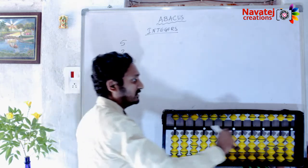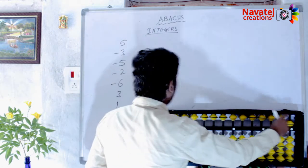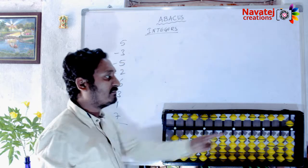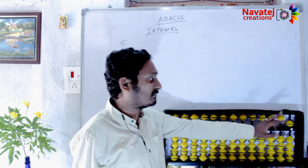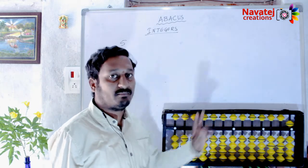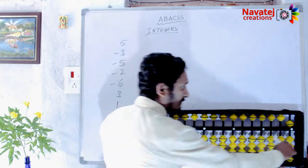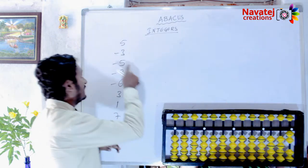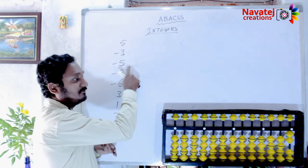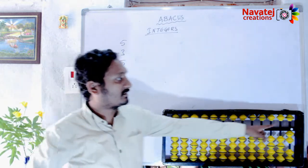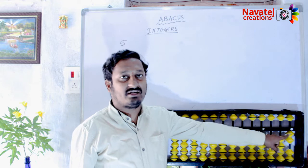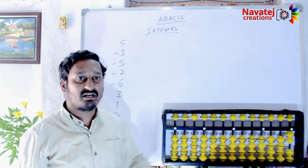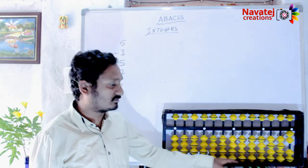The question is 5 and minus 3. 5 minus 3 we can do directly. But for minus 3, we use the formula: plus 2 minus 5. Then after minus 5, we have a negative number.